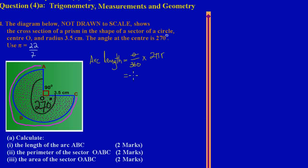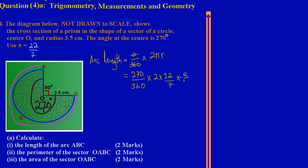So here now, we are going to substitute with 270. We are going to replace theta with 270, all over 360. And that is being multiplied by 2 times pi, which they gave us to be 22 over 7. And that is being multiplied by the radius, which is 3.5. The radius is the distance from the center O to any point touching the circumference — for example, from O to C, which is 3.5.